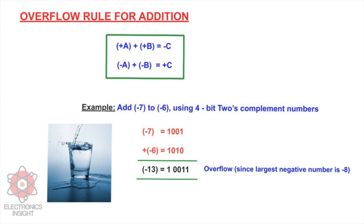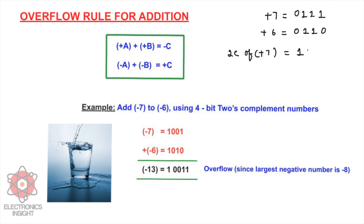Here is an example of overflow during addition: we add −7 to −6 using 4-bit two's complement numbers. Since both are negative, we take the two's complement of the positive values. +7 is 0111 and +6 is 0110. The two's complement of +7 is 1001 (one's complement 1000, plus one gives 1001), and the two's complement of +6 is 1010.